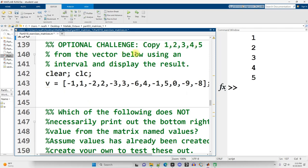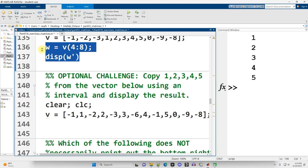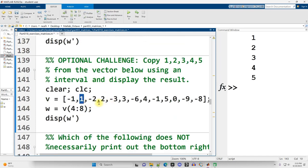Copy 1, 2, 3, 4, 5 from the vector below using an interval. Display the results. I'm going to start off just by copying this because that saves me a little bit of time. And the 1, 2, 3, 4, 5, it's basically every other one starting at the second one and ending it, again, I think the eighth. So let's say 2, colon, 2, colon, 8. Let's see if that works.